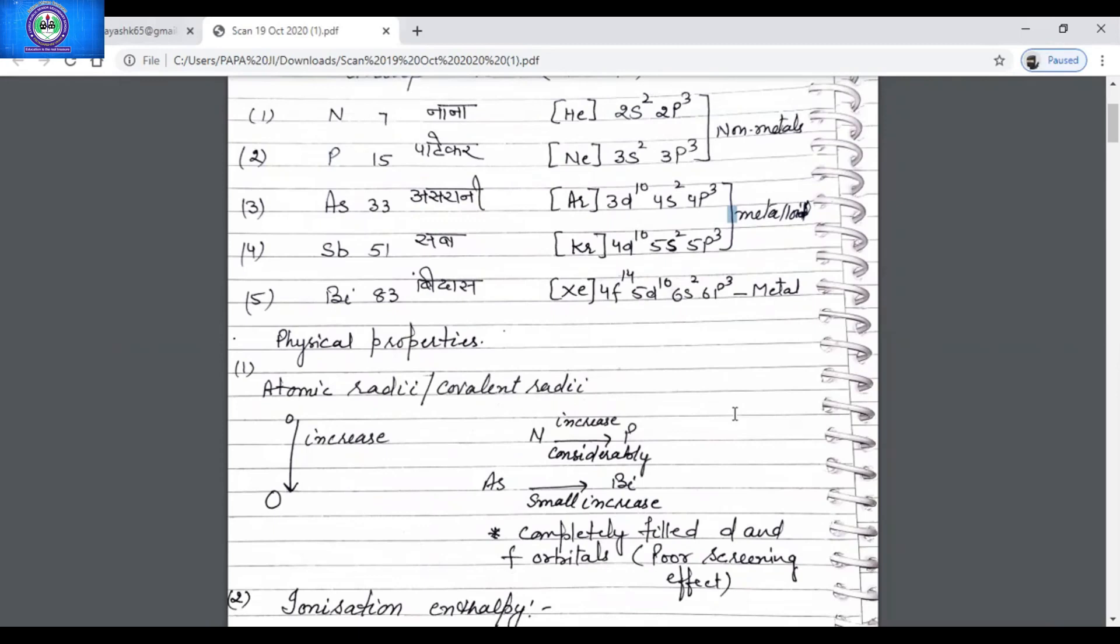The increase in atomic radii from nitrogen to phosphorus is considerable, whereas arsenic to bismuth, even though there is an increase in size, the increase is small. What is the reason? It's due to the intervening d and f electrons which show poor shielding effect.